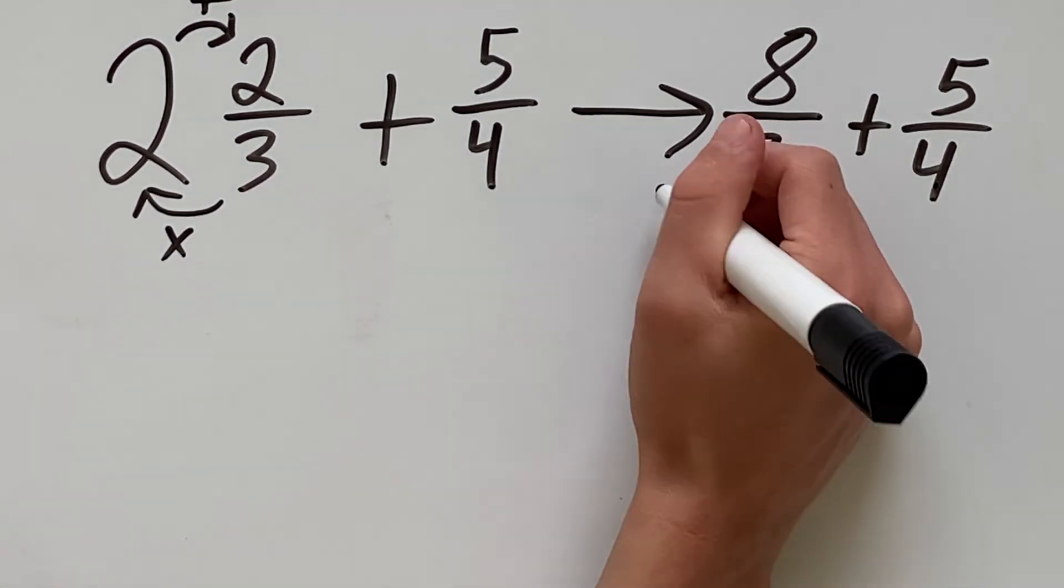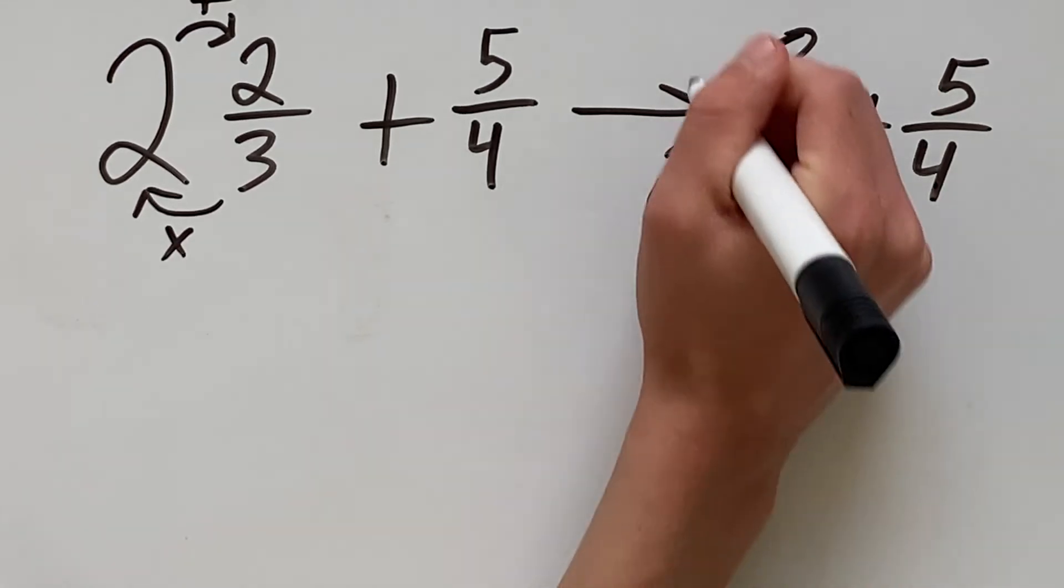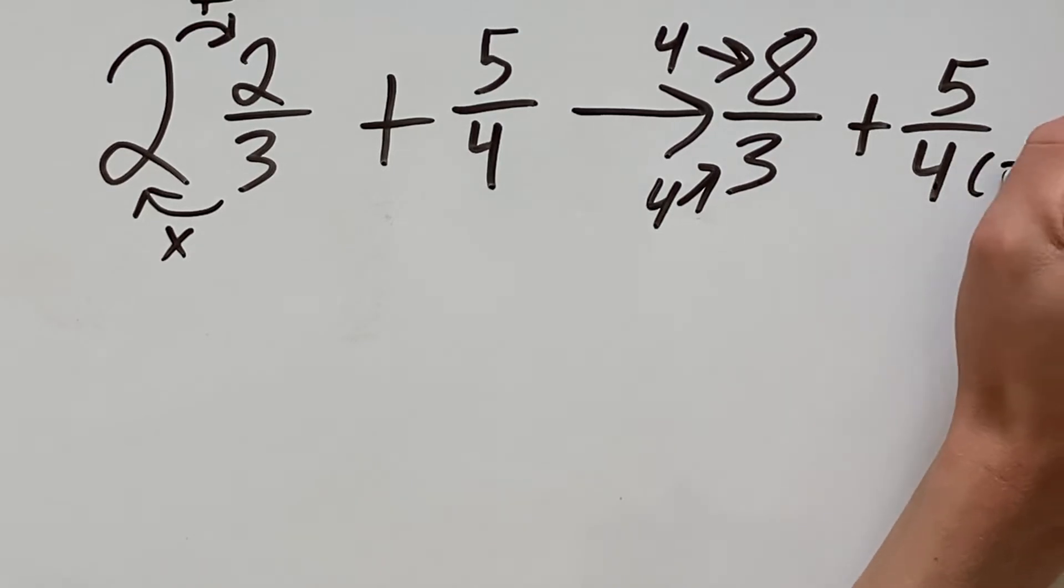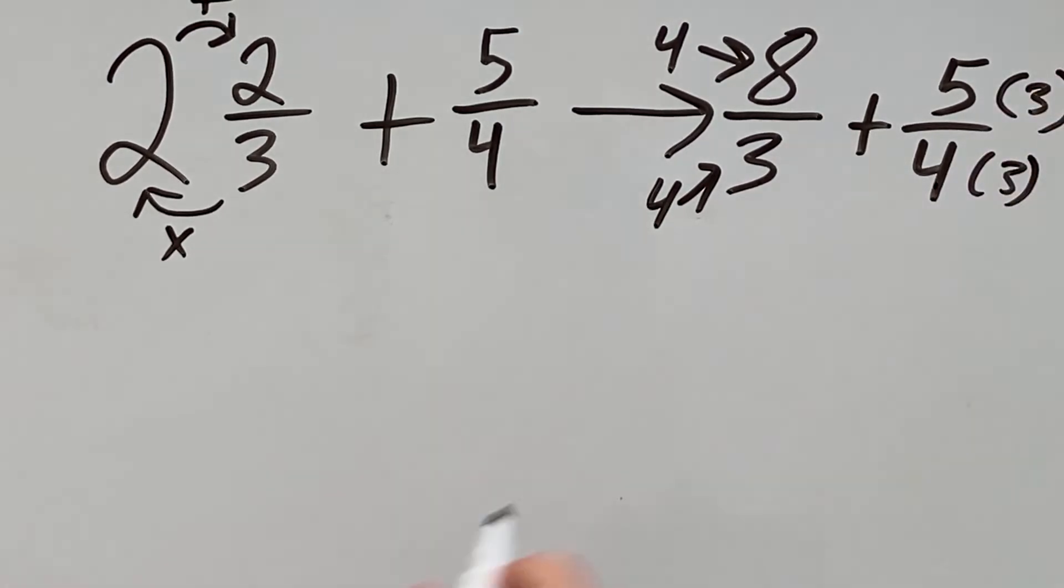To get 12, we will multiply 4 on the top and the bottom of this fraction, and 3 on the top and bottom of this one.